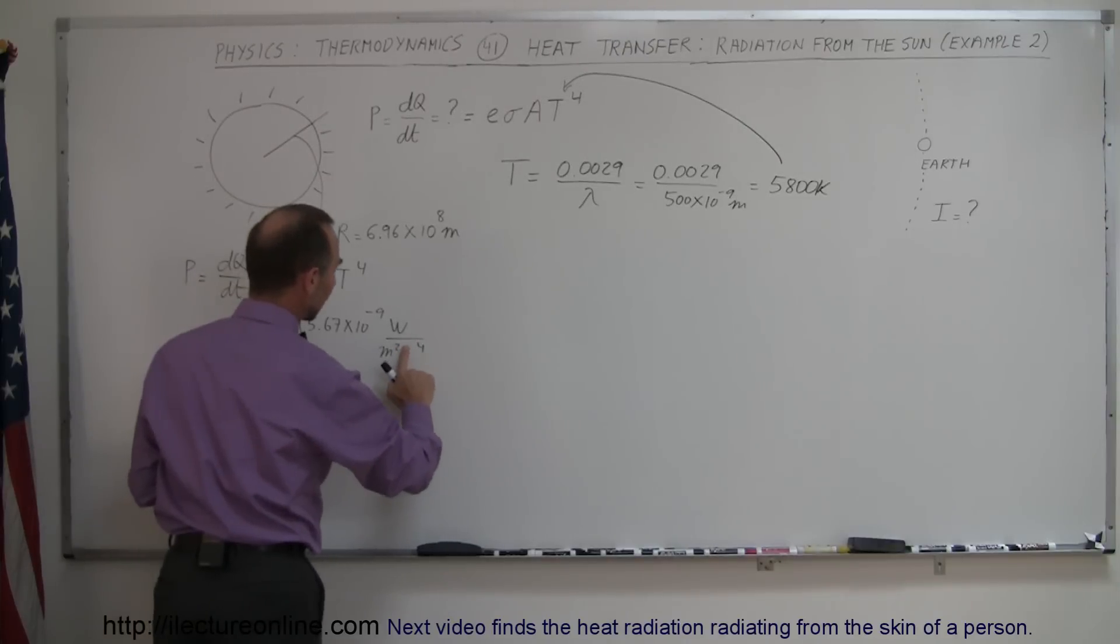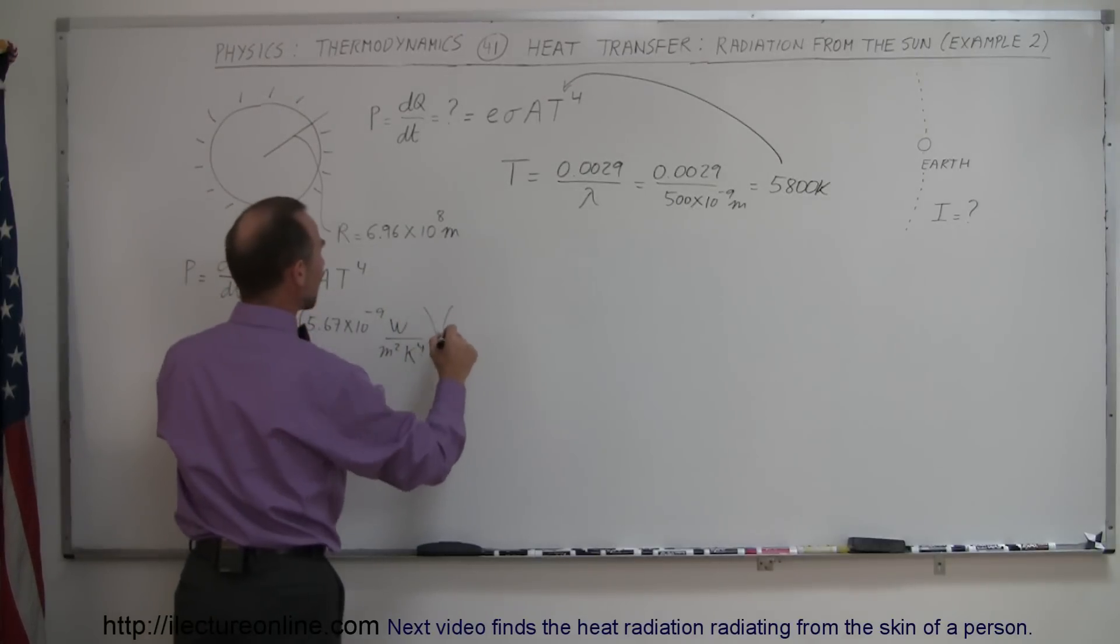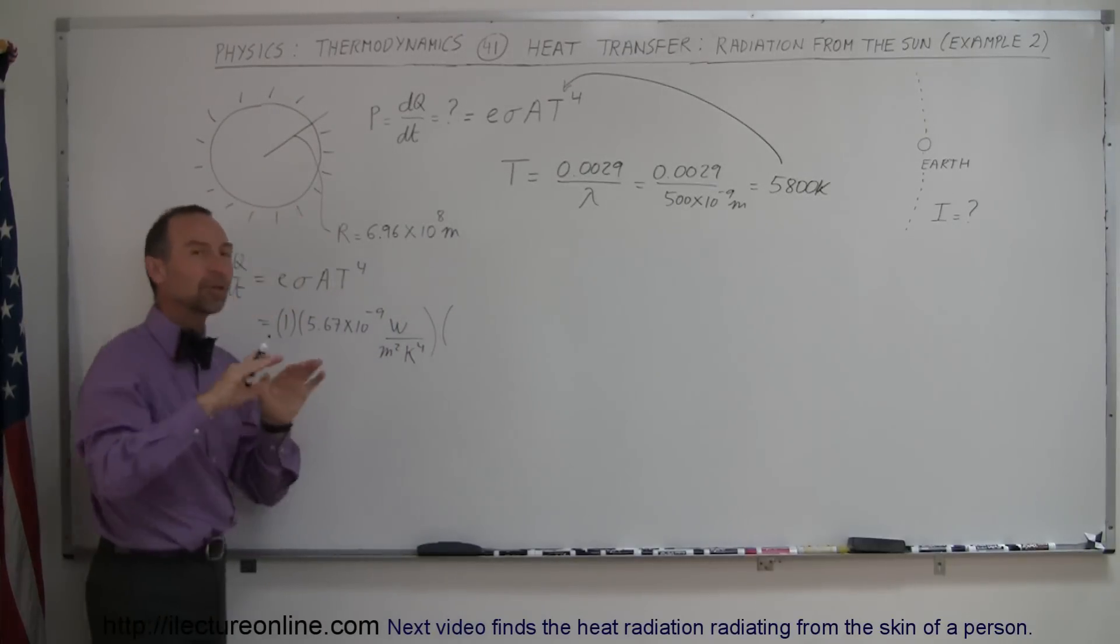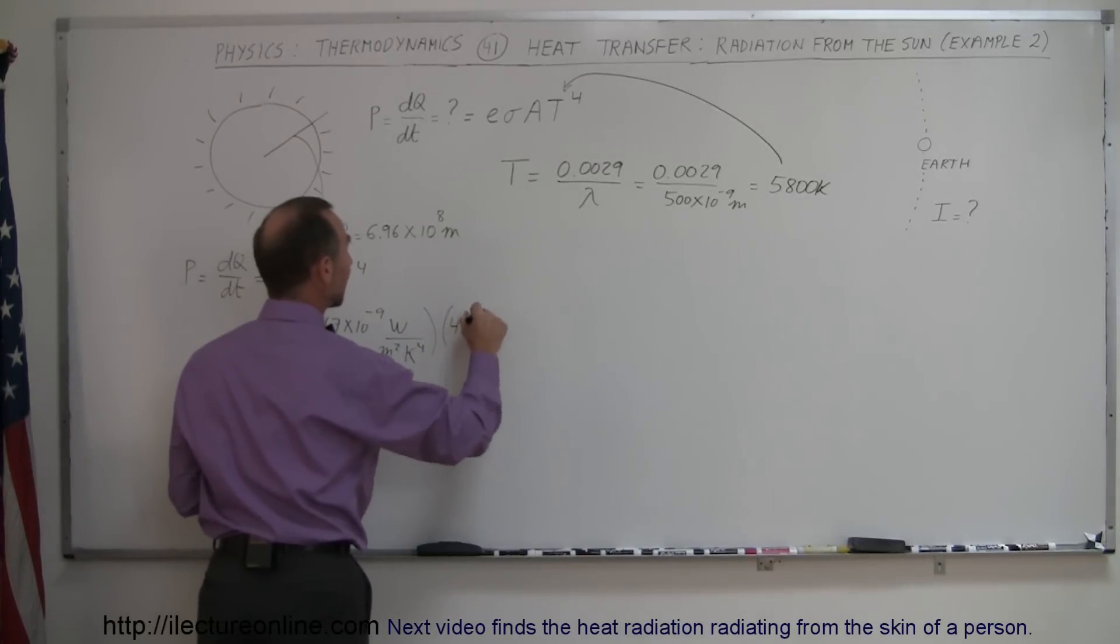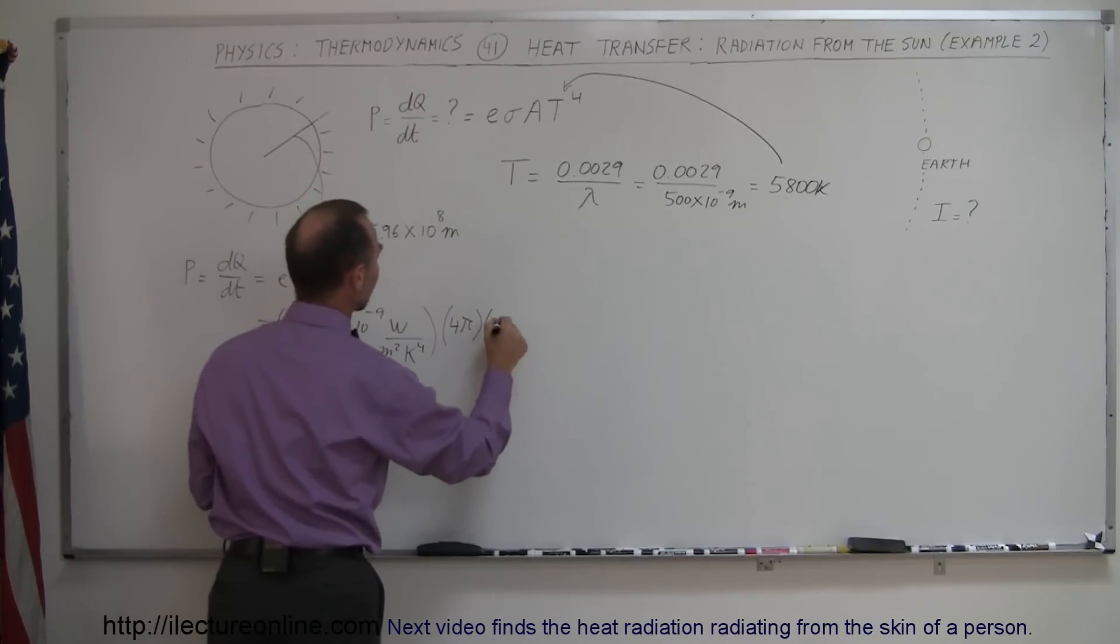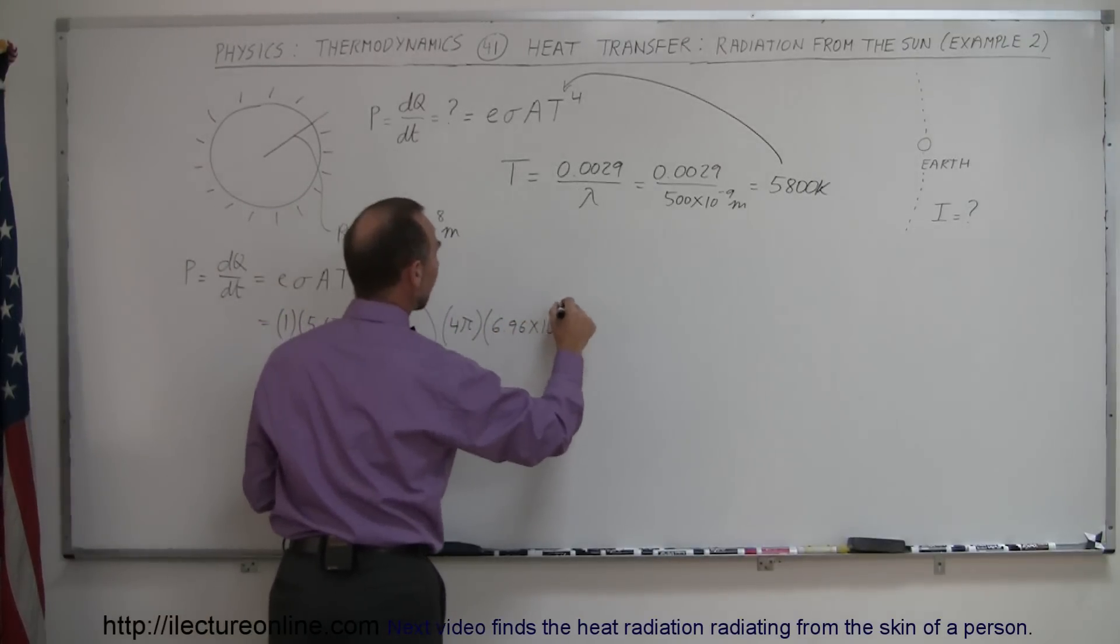And, of course, that would be Kelvin to the fourth power. We have to use the units. That is sigma. Now, the area would be the surface area of the sun, which would be 4 pi times the radius squared. And the radius here is 6.96 times 10 to the 8 meters. We have to square that.